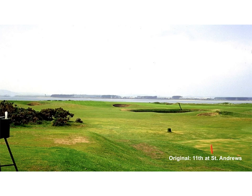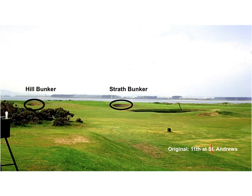The green slopes steeply from back to front. It is protected by two bunkers named the Hill Bunker on the left and the Strath Bunker on the right. The Strath Bunker is a pot bunker, and in true Eden holes that are copied into golf course designs, there is a pot bunker.